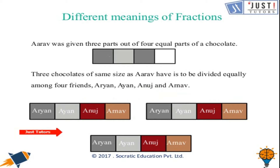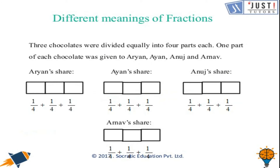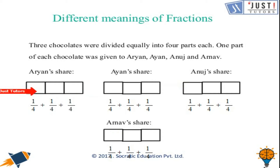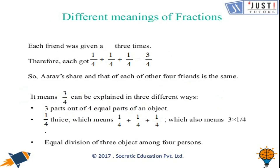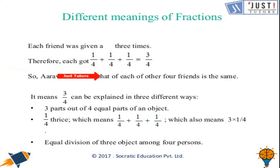From each chocolate, each person will get one part. Since there are four people, we say Arav gets one quarter from the first chocolate, one quarter from the second chocolate, and one quarter from the third chocolate — and the same for Ayaan, Anosh, and Arnav.